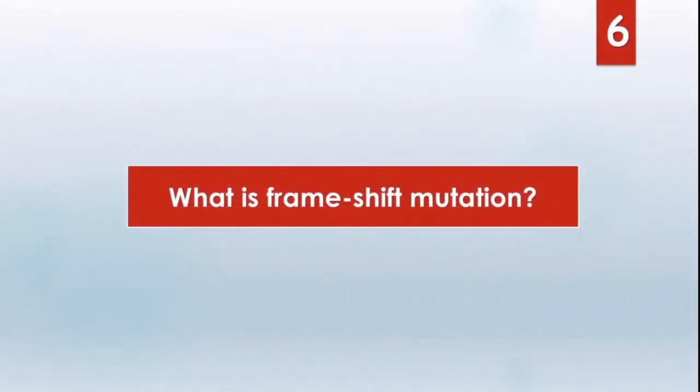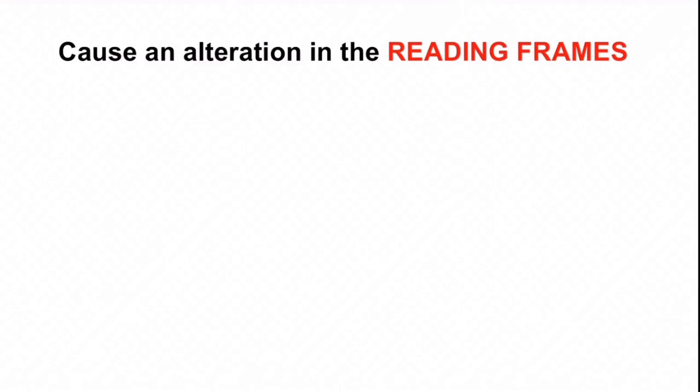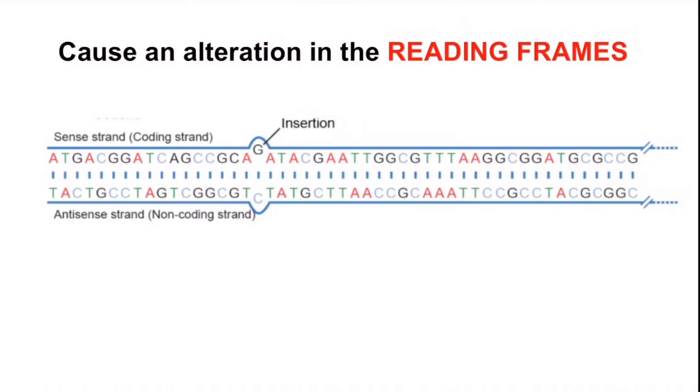Our next question is, what is frameshift mutation? When deletion or insertion of a sequence is 3 or a multiple of 3, there is no alteration in the reading frame. Please look at the picture very minutely. See, there is an insertion of G at this point.